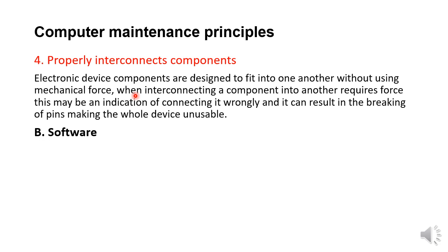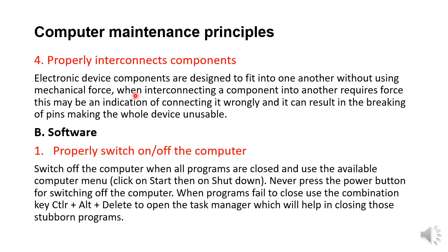Now let us see some computer maintenance principles for software. Software refers to intangible parts of the computer — technically, the set of instructions executed by the computer processor to perform a specific task. Remember that we have an operating system, which is software able to control other software. The first software maintenance principle is to properly switch the computer on and off. To switch on the computer, press the power button and wait for the operating system to load into memory — this is called booting.